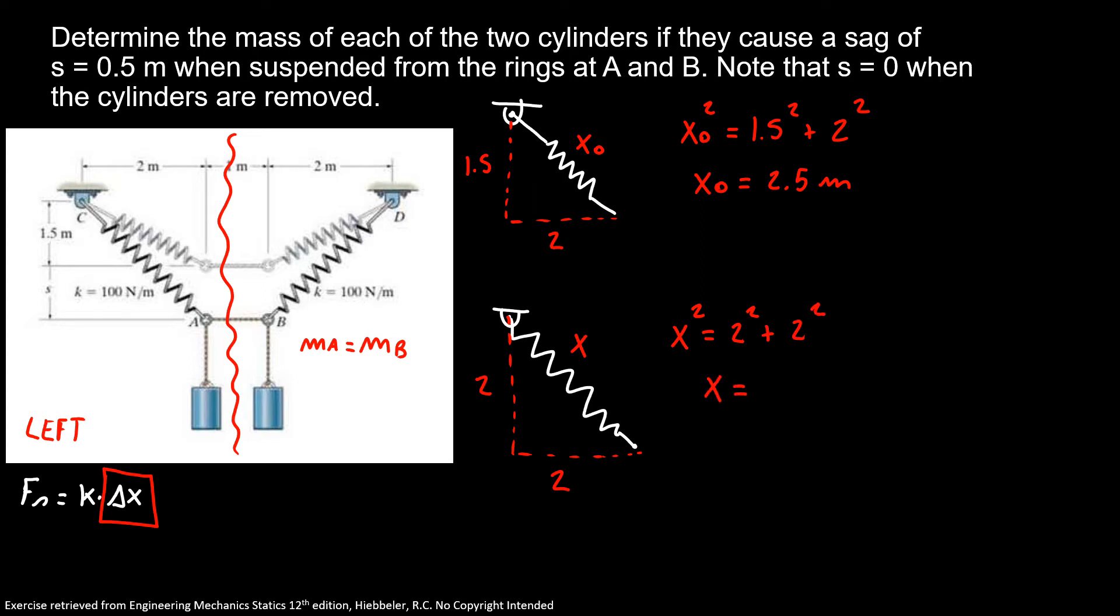Applying the same theorem, I have x square is equal 2 square plus 2 square. So my x is equal 2.83 meters. Now, I can discover my spring force at ring A.